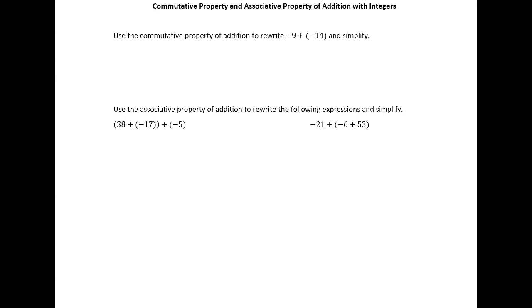The commutative property of addition and the associative property of addition are both properties we've already taken a look at back in chapter 1. We're going to take another look at them now, number 1 to just review them, and then number 2 to think about the appropriate use of parentheses with negatives.